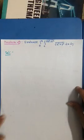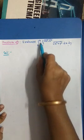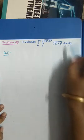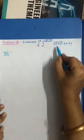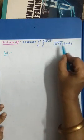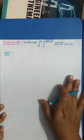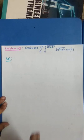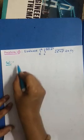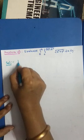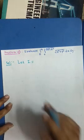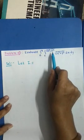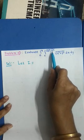Let us see the first example: evaluate the integration from 0 to a, from 0 to √(a²−x²) of √(x²+y²) dx dy. The integrand involves x squared plus y squared, so we use polar substitution. We denote the given integration by I and identify the limits. The inner integration involves variable x in its limits, so those are limits of y — y varies from 0 to √(a²−x²) — and the outer integration gives limits of x from 0 to a.